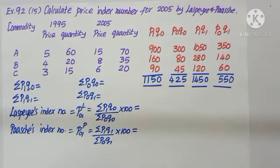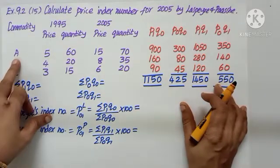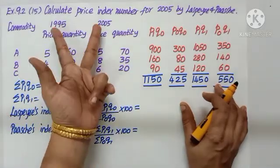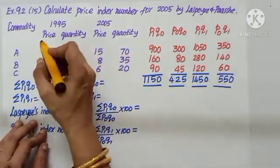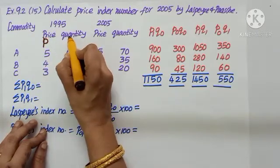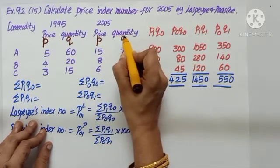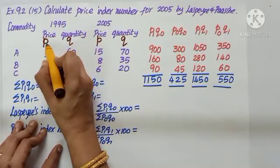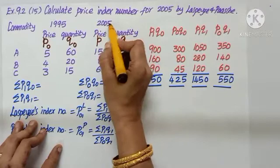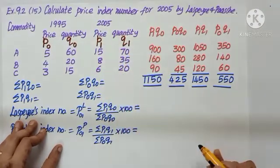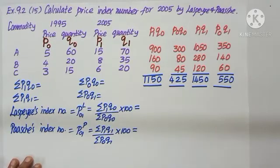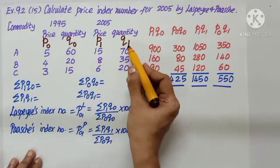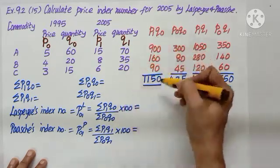Question number 15. Calculate price index number for 2005 using Laspeyre's and Paasche's formula. Given commodity 1995 and 2005, comparing these two. This is base year and this is current year. You are given price and quantity. Let us write down: Price tells me P, quantity is Q. 1995 is base year, so put P0, Q0. 2005 is current year, so put P1, Q1. If you change any of this, the entire answer will go wrong. So in index number, identifying P0, Q0, P1, Q1 is an important step.